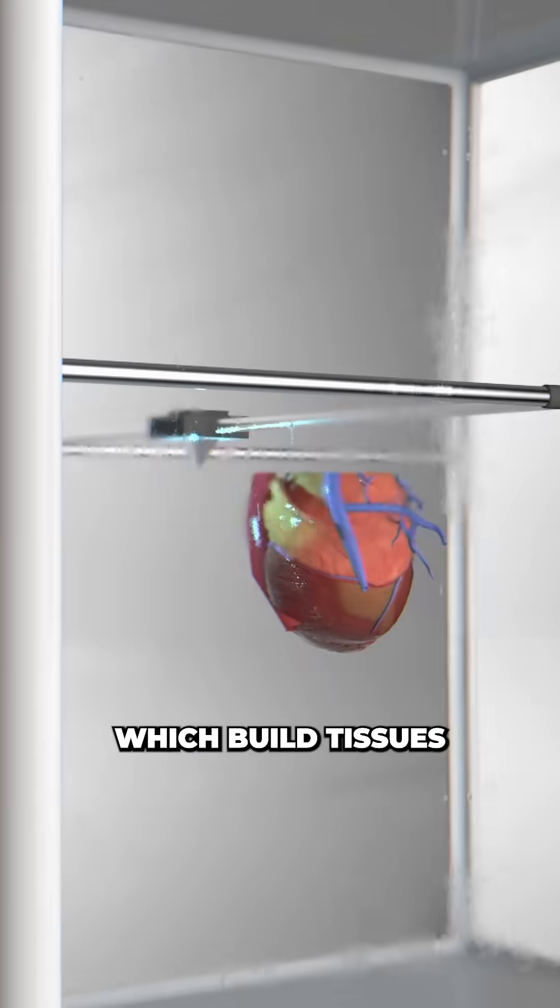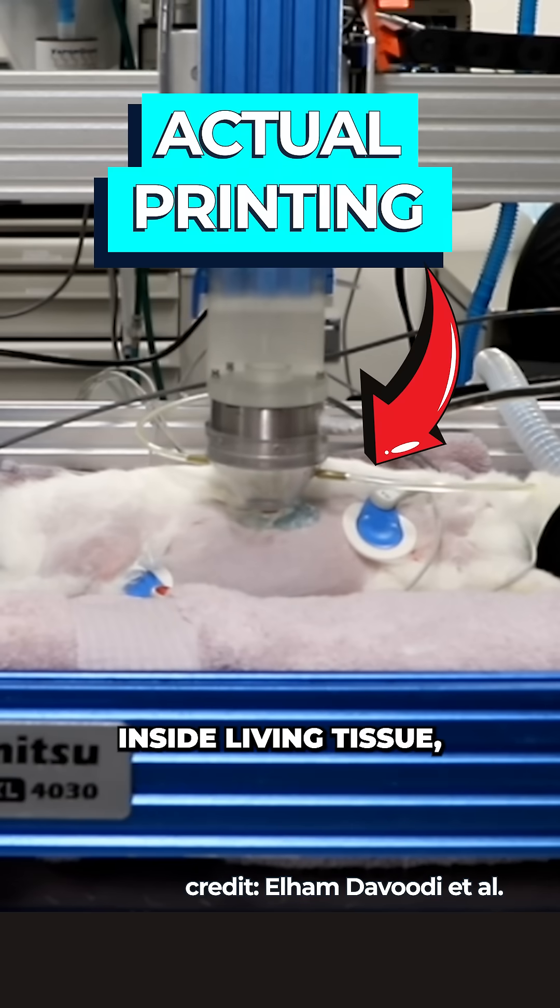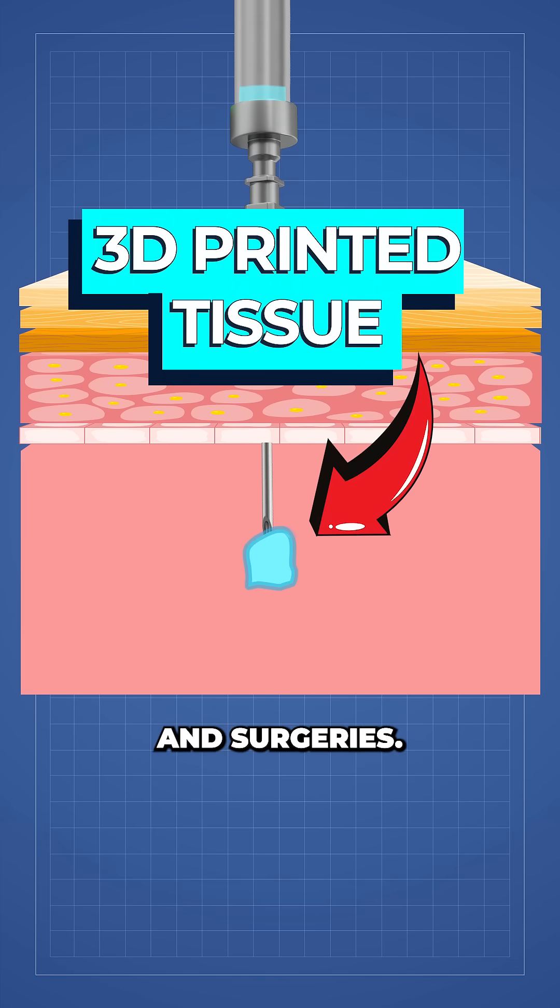Unlike conventional bioprinters, which build tissues outside the body for later implantation, DISP does it directly inside living tissue, requiring only a single injection and avoiding the need for scalpels and surgeries.